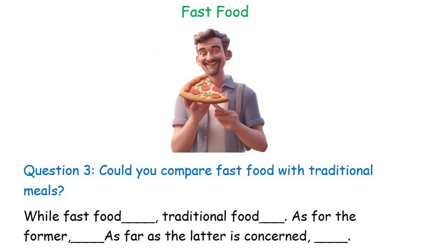Now let's listen to a band 9 response where the speaker will use the same template when answering the same question. While fast food may offer convenience and quick service, traditional meals tend to prioritize freshness and nutritional value. As for the former, fast food is often highly processed and contains high levels of salt, sugar, and unhealthy fats. As far as the latter is concerned, traditional meals are often prepared using fresh, locally sourced ingredients and homemade recipes, resulting in more wholesome and nutritious options.